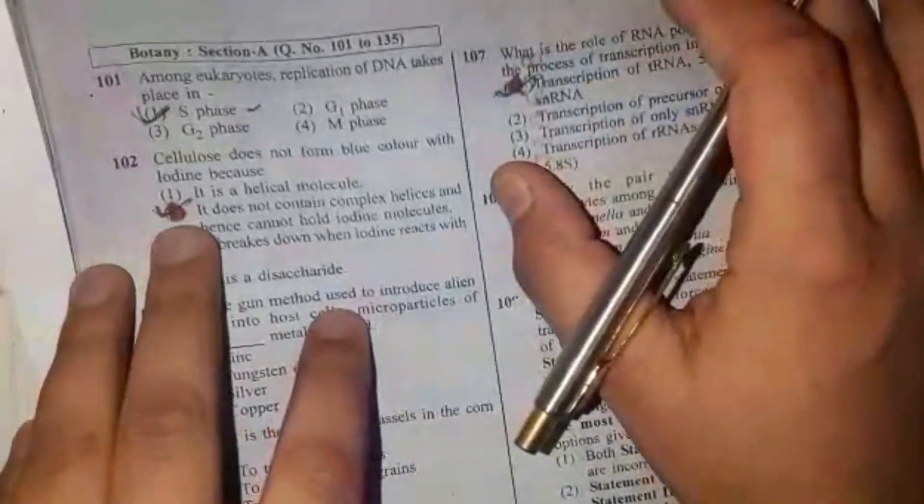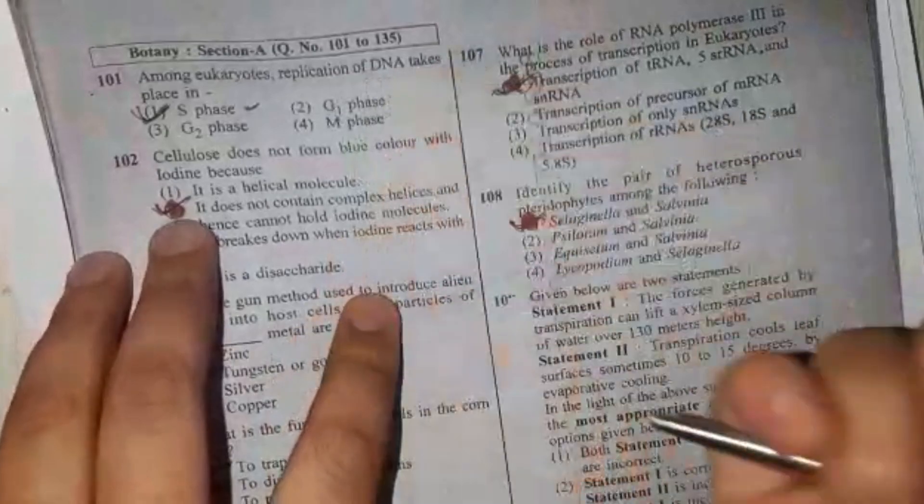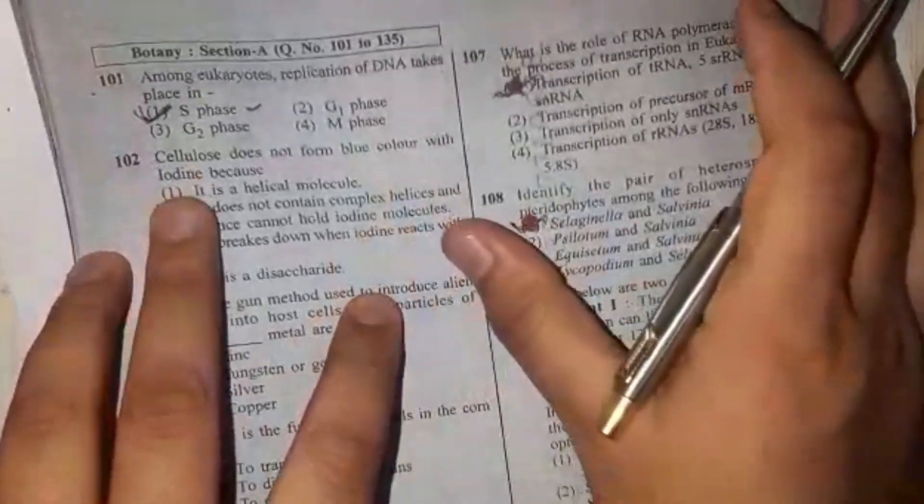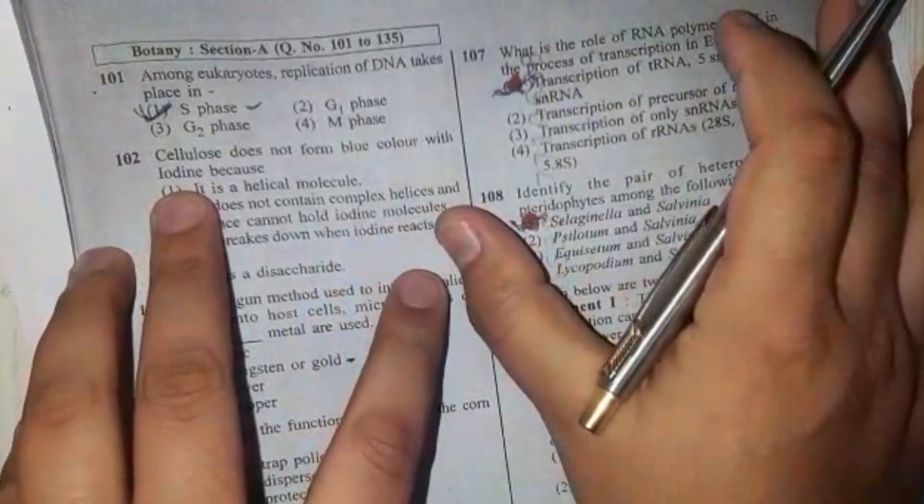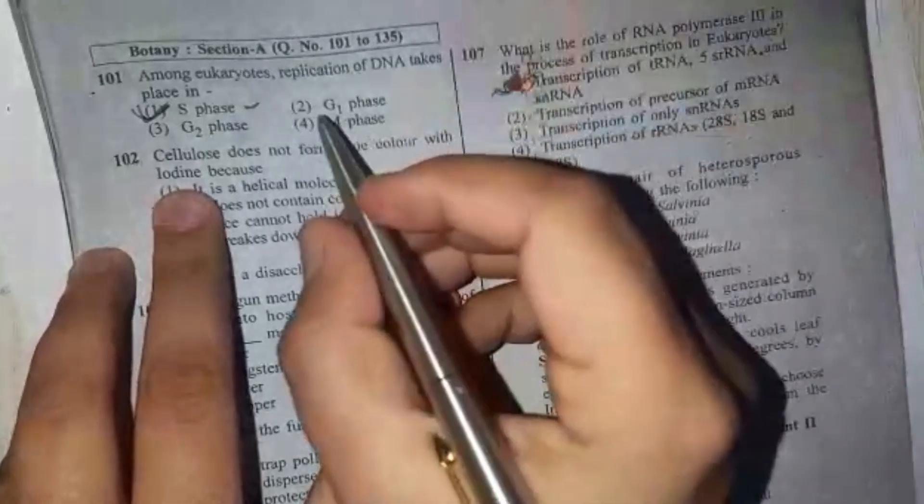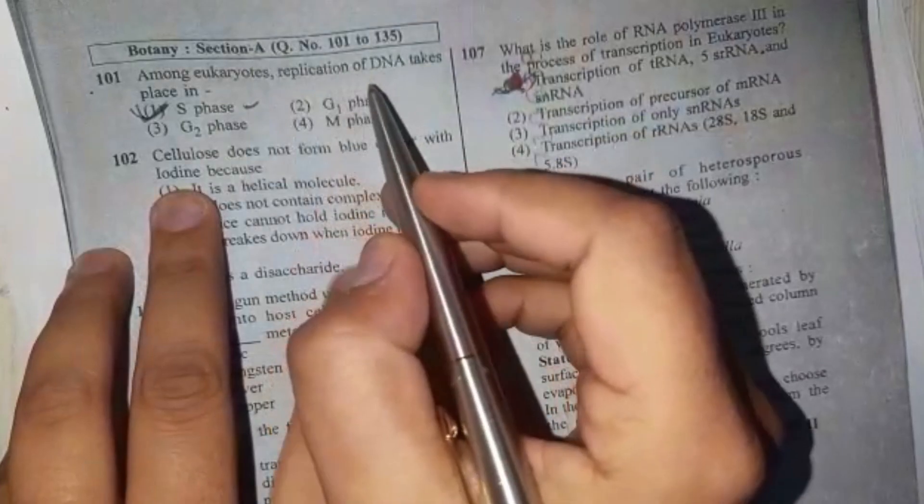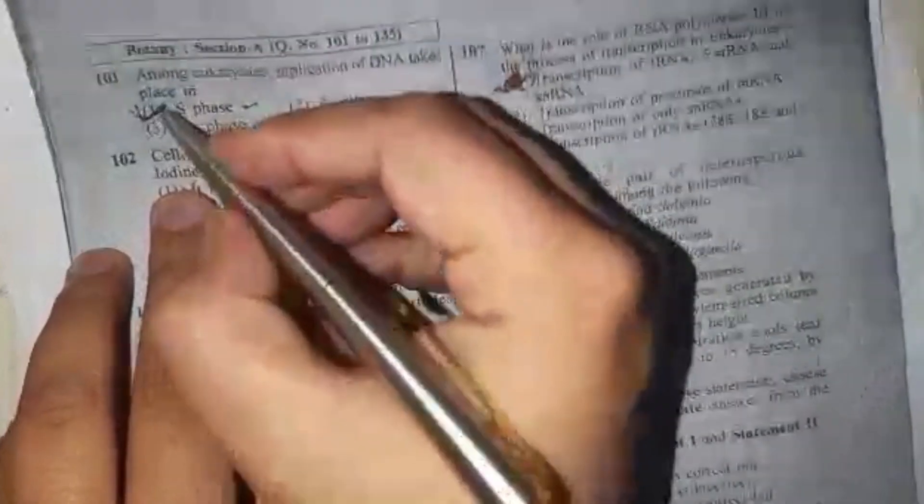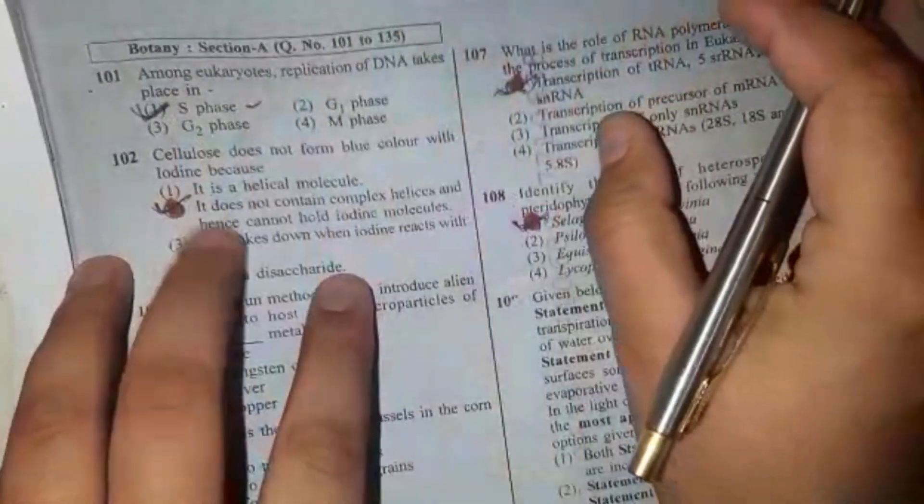Okay, so Botany Section A, question number 101 to 135. First question is: Among eukaryotes, replication of DNA takes place in? We know that the replication of DNA is synthesized in S phase, so this answer will be S phase.